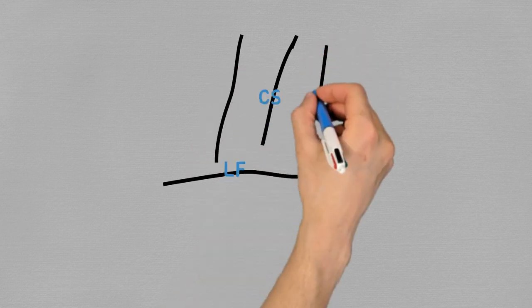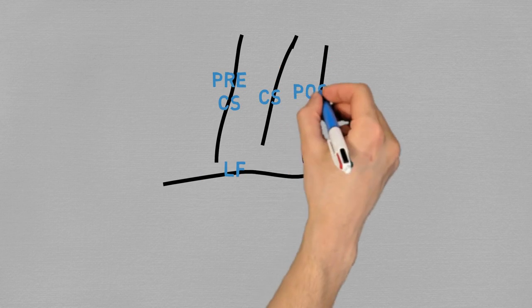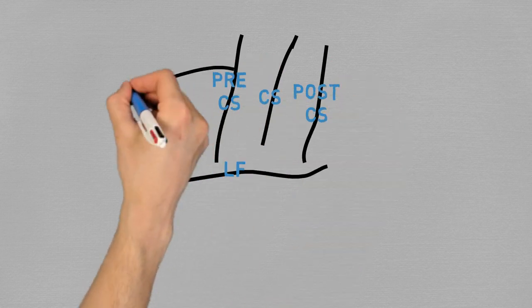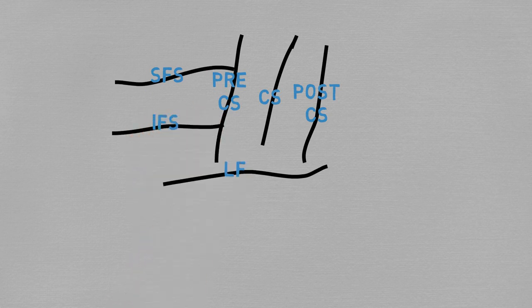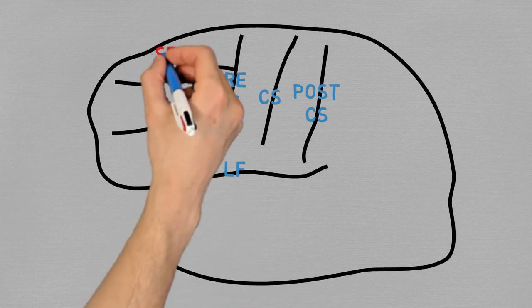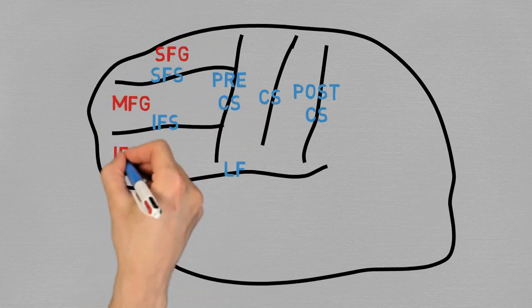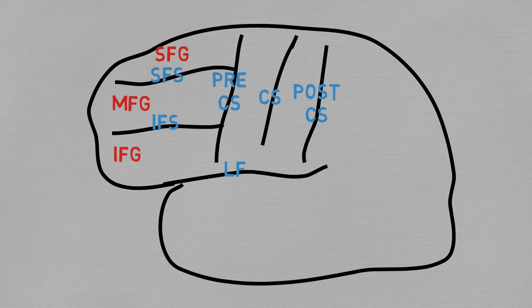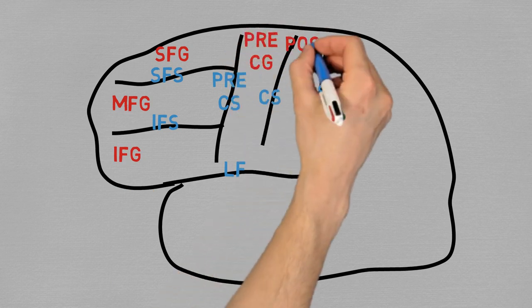In front and behind the central sulcus, there are the parallel precentral sulcus and postcentral sulcus, respectively. And perpendicular to the precentral sulcus, there are the superior and the inferior frontal sulci. Let's add now the outer rim of the brain, and suddenly everything makes sense. We have the superior, middle and inferior frontal gyrus. And on each side of the central sulcus, there will be the precentral and postcentral gyrus.